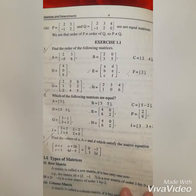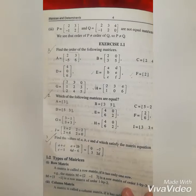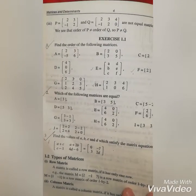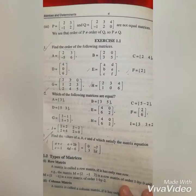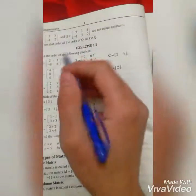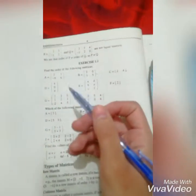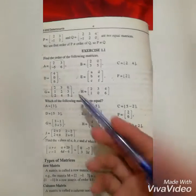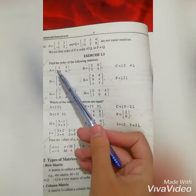Let's go to Exercise 1.1. The first question is: Find the order of the following matrices. To find the order, you have to count the rows and columns.